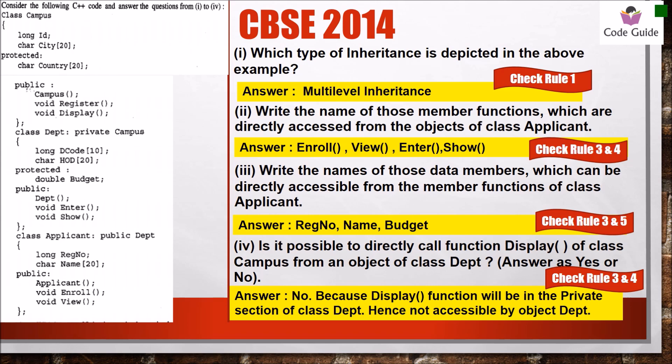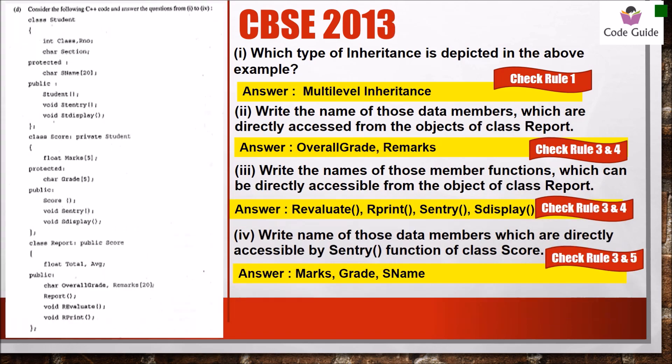From CBSE 2014, again the type of inheritance is asked — rule number 1 gives multi-level inheritance. The member functions directly accessible from objects of applicant are identified using rules 3 and 4. For data members accessible from the member function of class applicant, a member function can access all three sections, so registration number, name, and budget derived from the base class are all accessible. To call the function display, since it is under the private section of department, it is not accessible by the object of class department.